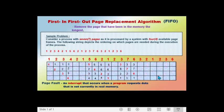The next page called is page 3. The frames contain pages 3, 7, 6, and 1. Page 3 is in the frame, so no page fault occurs. The next page called is page 2. The frames contain pages 3, 7, 6, and 1. Page 2 is not in the frame, causing one page fault. Page 1 has been in memory the longest, so page 1 is swapped out and page 2 is swapped in.